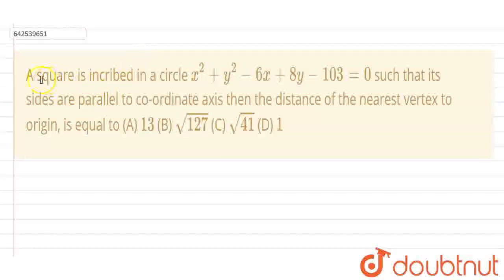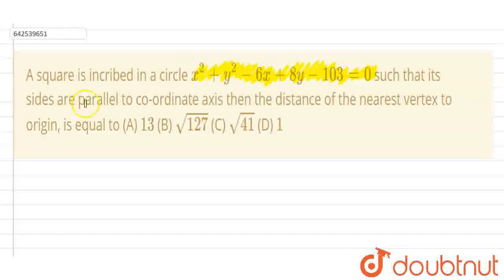The question says that a square is inscribed in a circle x² + y² − 6x + 8y − 103 = 0. We are given a circle with this equation and a square inscribed inside it such that its sides are parallel to the coordinate axis. The distance of the nearest vertex to the origin: option A is 13, B is √127, C is √41, and D is 1. We need to find the distance of the nearest vertex to the origin.